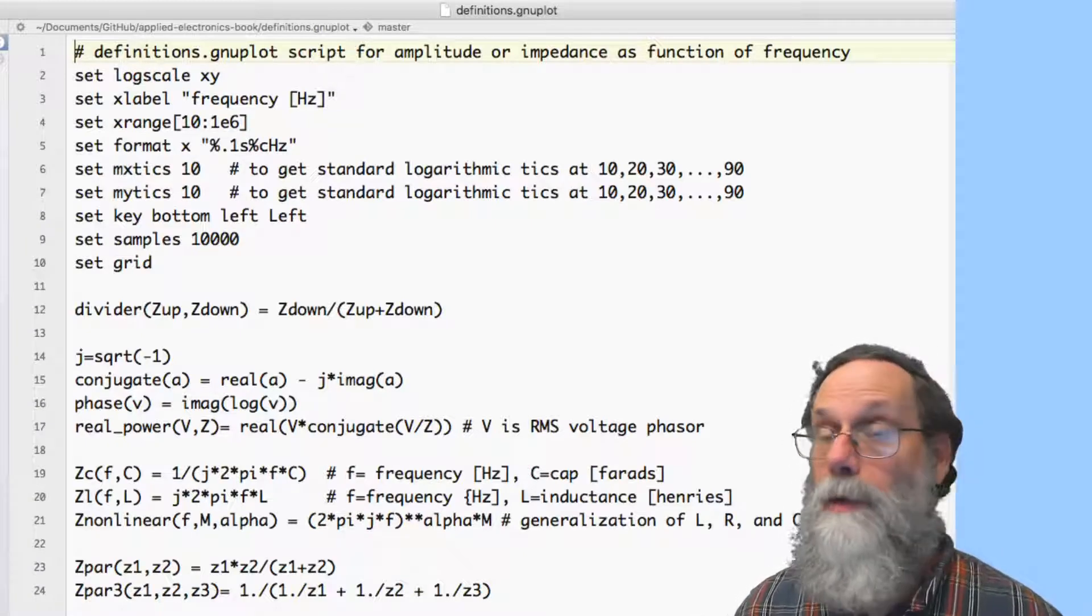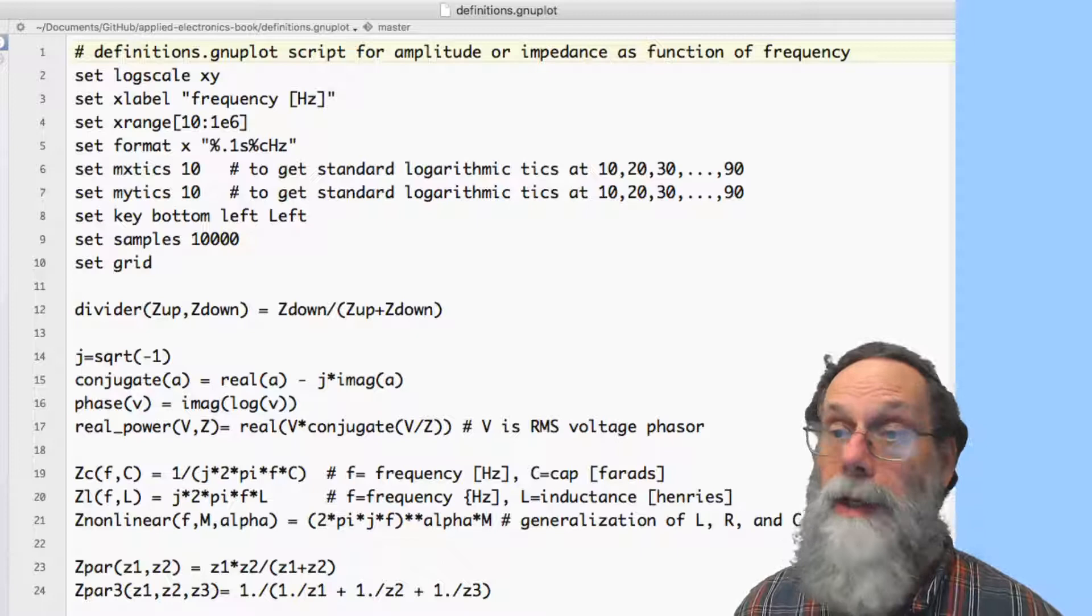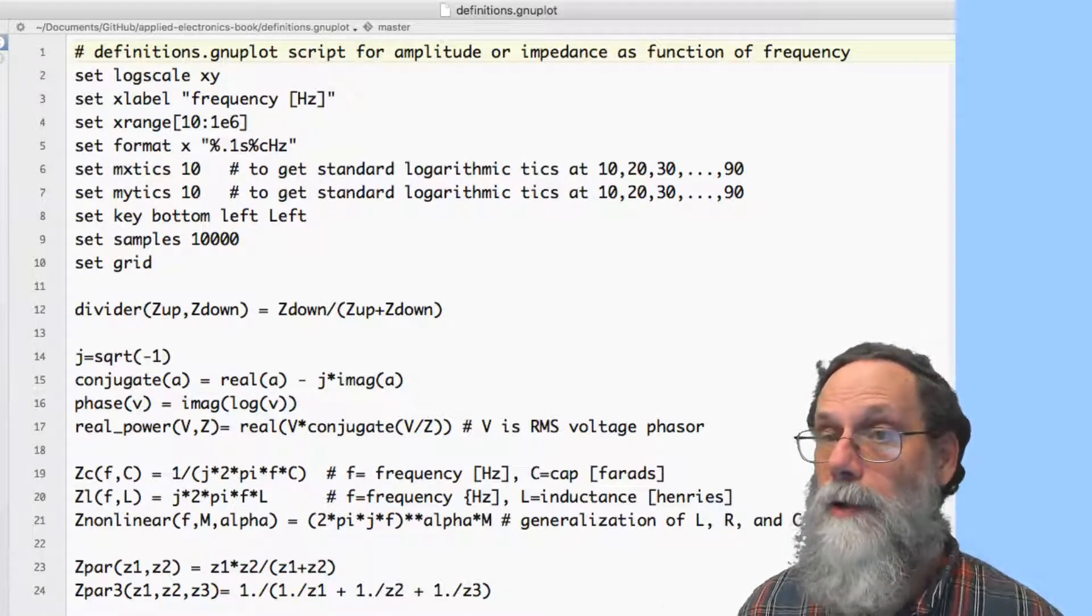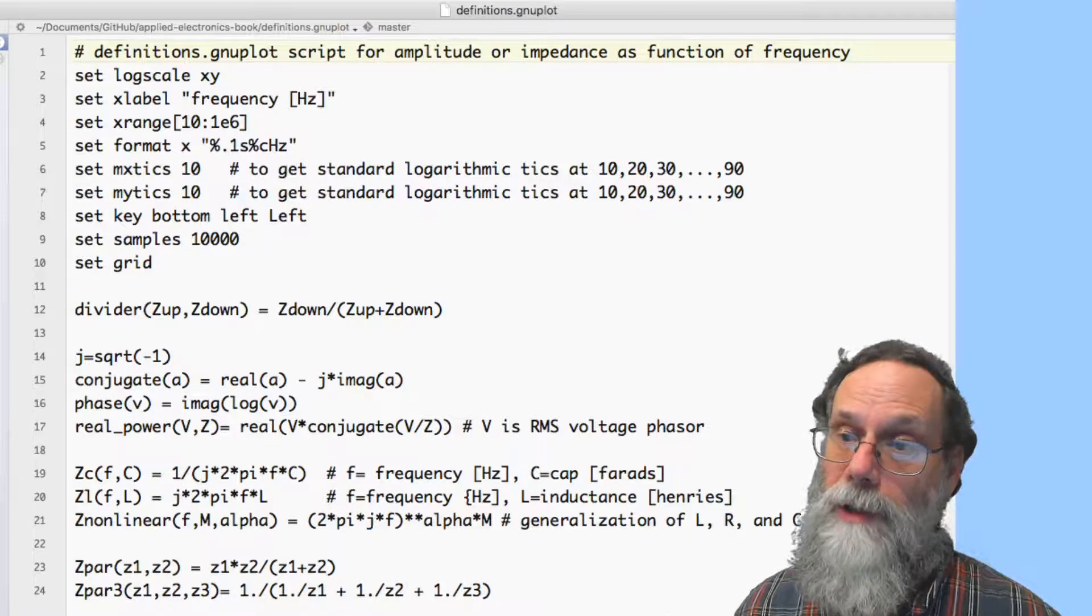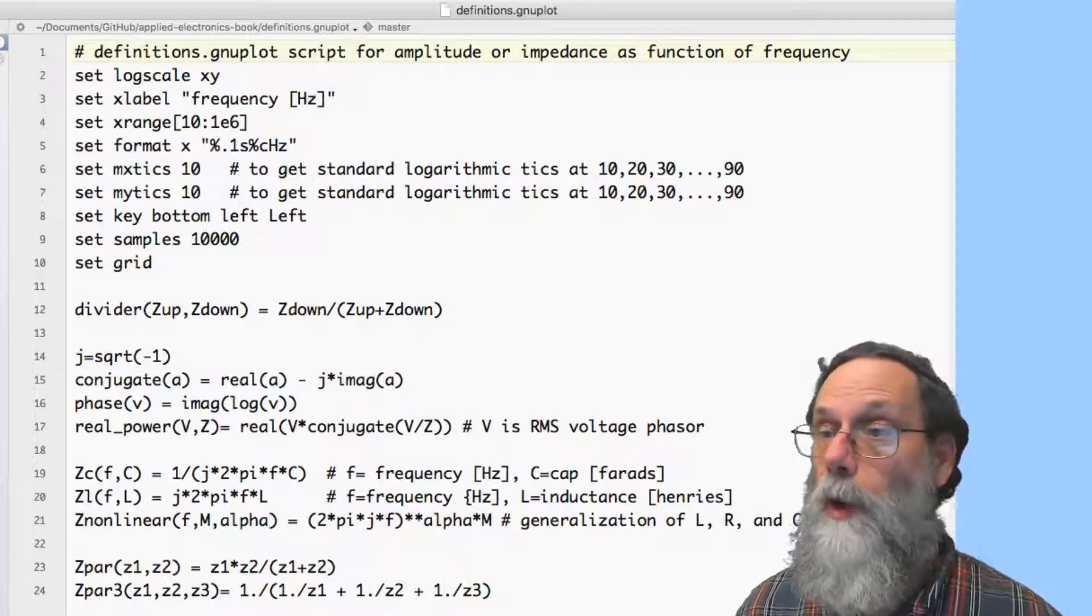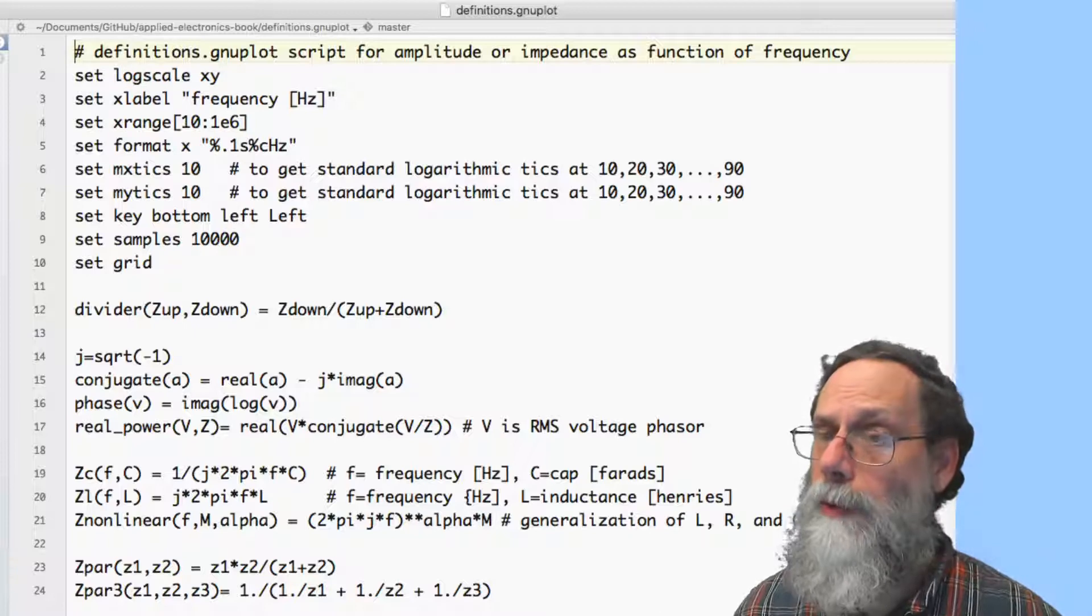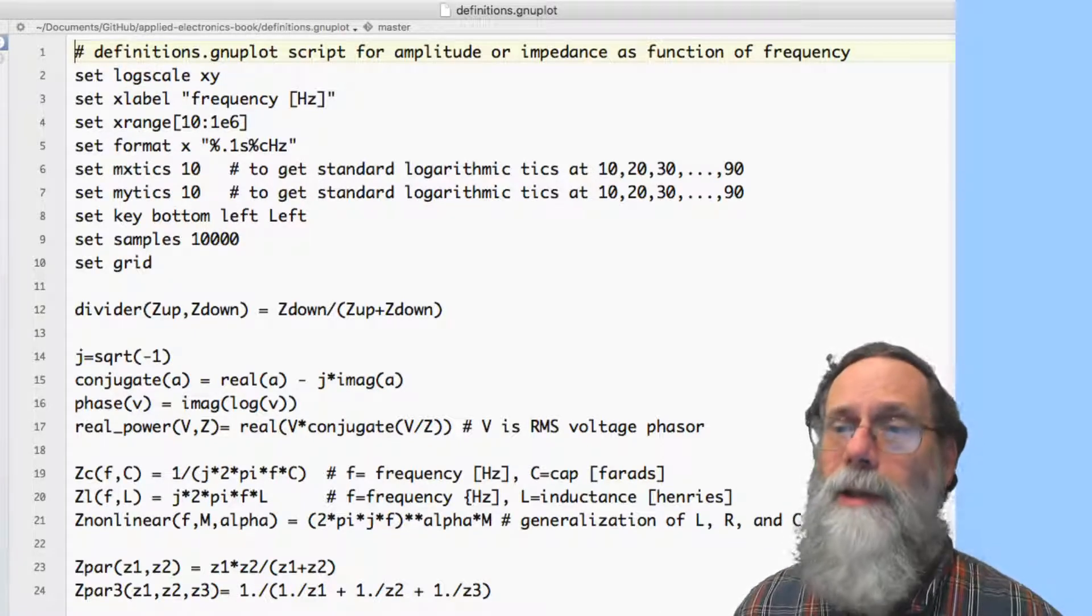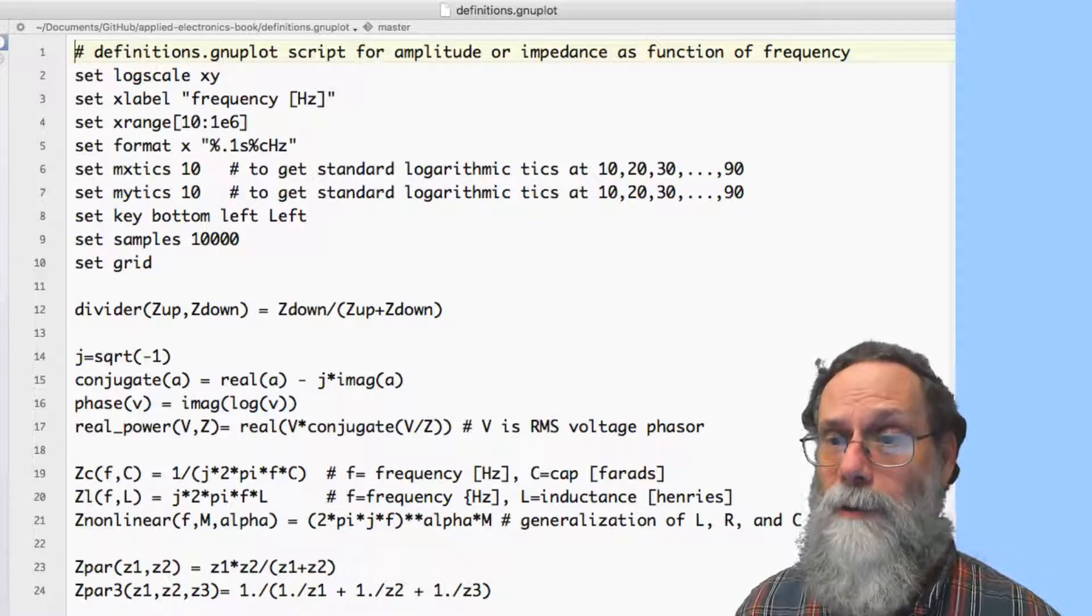It sets log scale xy, that says we want a log-log plot. I set the x label to be frequency in hertz, and I set an x range. Here I went from 10 hertz to 1 megahertz. It's a good idea to use 1e3 for kilohertz and 1e6 for megahertz, because it gets really hard counting the zeros.